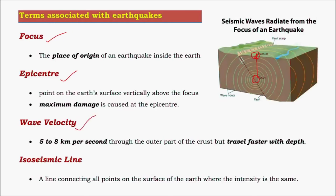Earthquake waves travel at speeds of 5 to 8 km per second in the earth's crust — that is, in the upper part of the earth — and travel much faster with depth as density increases. The isoseismic line is the line joining all points where the intensity of the earthquake is similar.